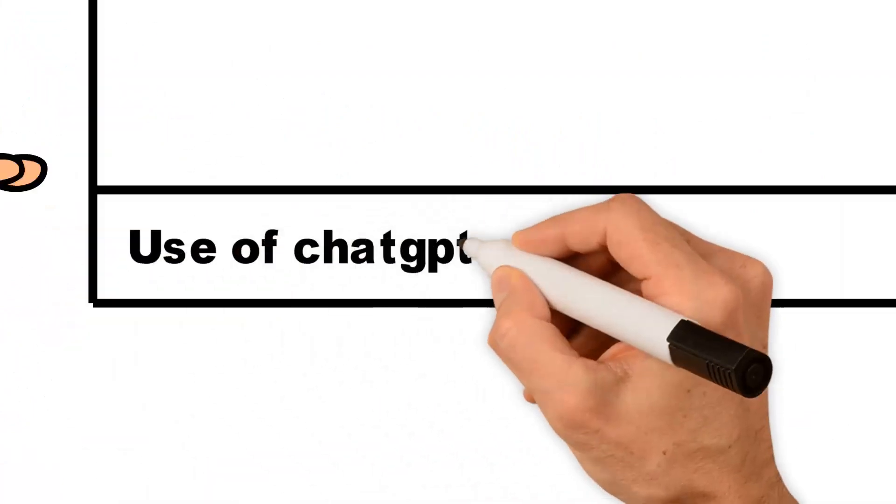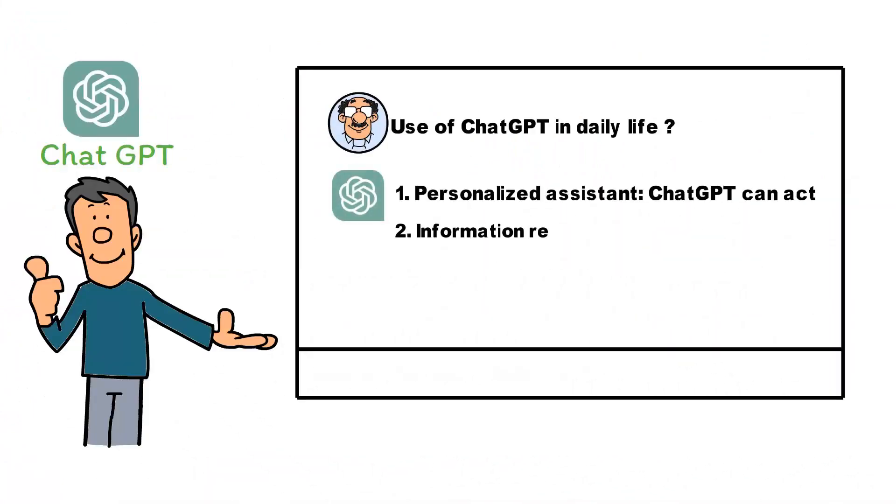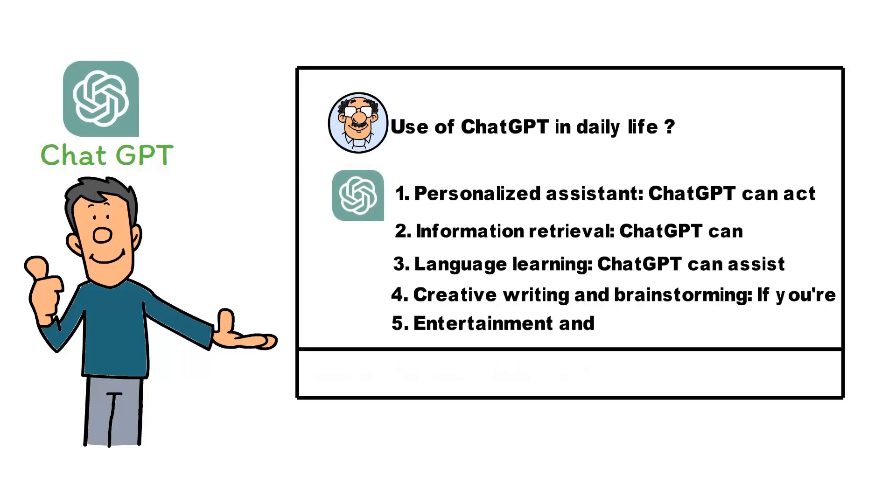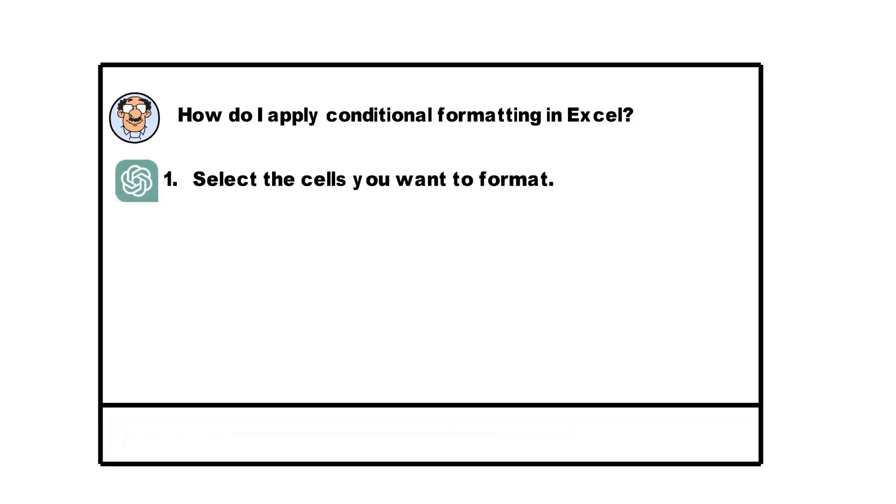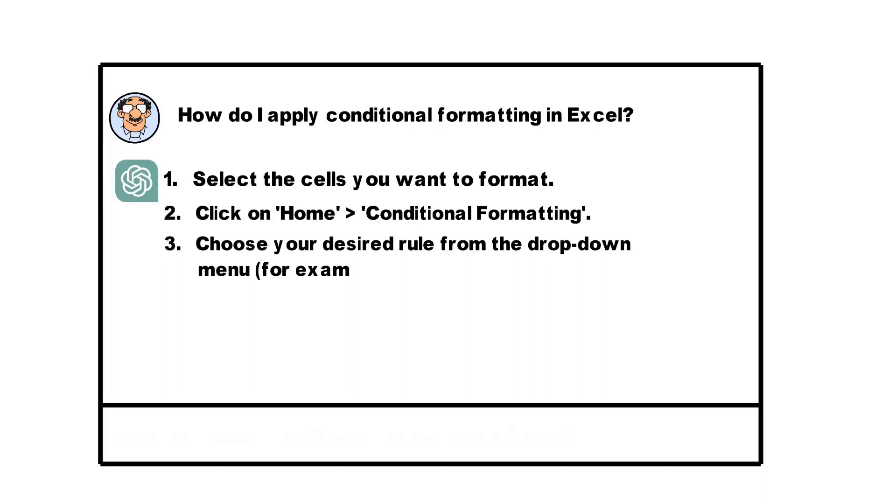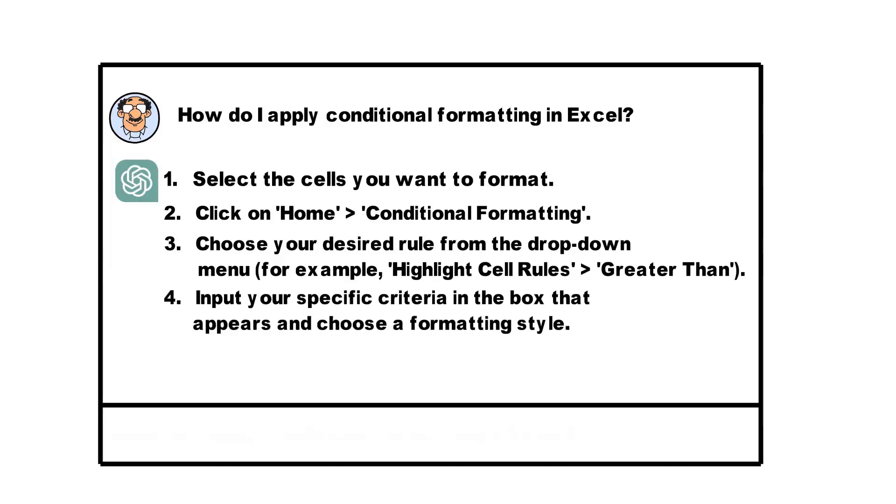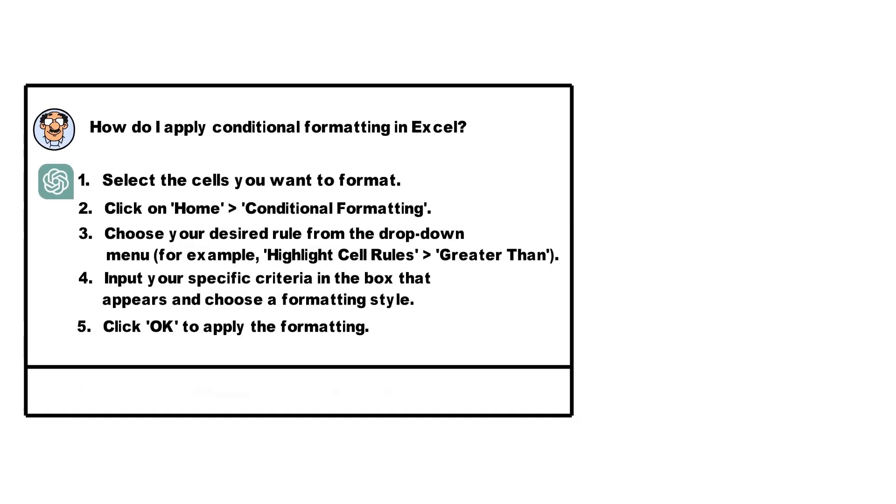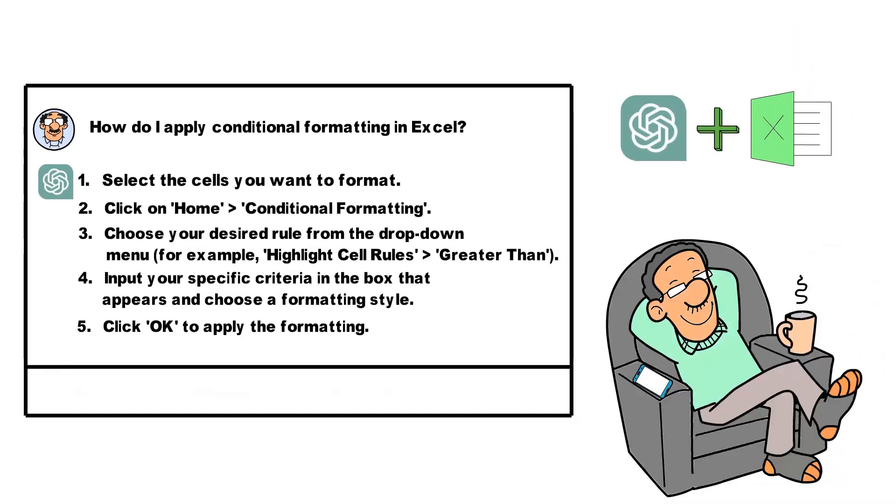ChatGPT's capacity to generate step-by-step instructions can be demonstrated by asking it to guide you through using Excel's Conditional Formatting feature. For example, asking how do I apply Conditional Formatting in Excel would yield a response like: 1. Select the cells you want to format. 2. Click on Home, Conditional Formatting. 3. Choose your desired rule from the drop-down menu. For example, highlight cell rules, greater than. 4. Input your specific criteria in the box that appears, and choose a formatting style. 5. Click OK to apply the formatting. This illustrates how ChatGPT can help you navigate Excel functionalities with ease.